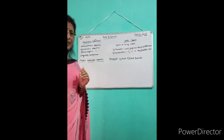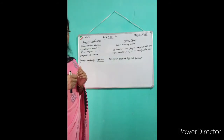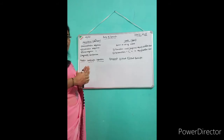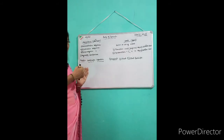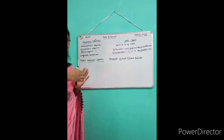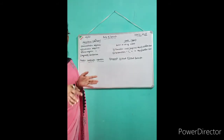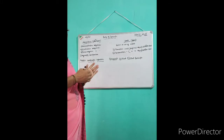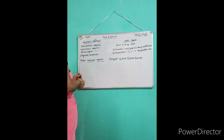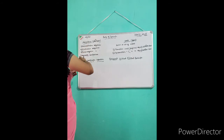His daughter is very small. What is the size of the daughter? She is very small. And what is the adjective here? Small. So there are three types of adjective.